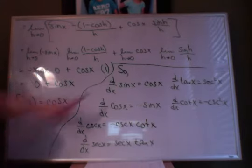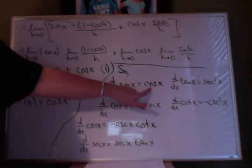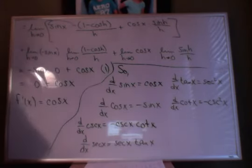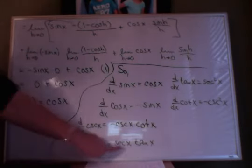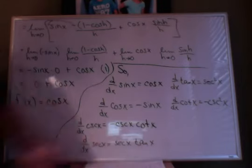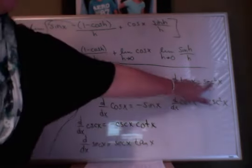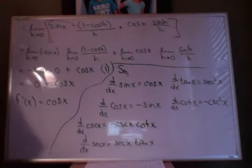The song summarizes: derivative of sine x is cosine x; derivative of secant x is secant x tan x; derivative of tan x is secant squared x. Remember the chain rule — don't forget the d/dx.